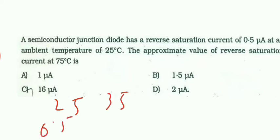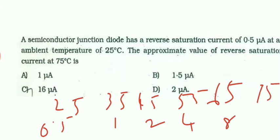At 35 degree, 1. 45 degree, twice the amount, 2. 55 degree, twice the amount of 2, 4. 65 degree, twice the amount of 4, 8. 75 degree, twice the amount of 8, 16. So what is the question they asked? They asked at 75 degree. So at 75 degree, the reverse saturation current is 16 microampere. So option C is the right answer.